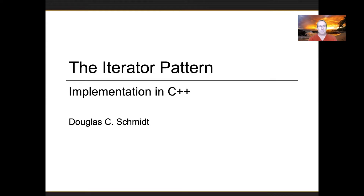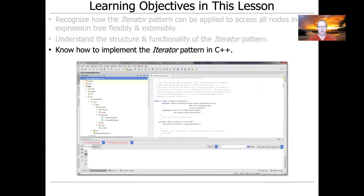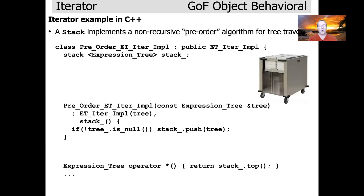Now it's time to start talking about the implementation of the iterator pattern in C++. I'm going to show you one of the implementations — there are actually four of them in the source code, and they all implement traversals over the expression tree. They all work on the same internal structure, but the traversal mechanisms are different. I'm going to focus on the pre-order expression tree iterator impl, or pre-order ET iter impl, to abbreviate it.